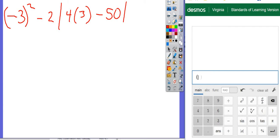I'm going to be careful and make sure I get everything put in correctly. Negative 3 is inside the parentheses squared, so that means the negative will also be squared. Minus 2. Absolute value 4, and then parentheses 3. Close those parentheses. Minus 50, and close your absolute value.